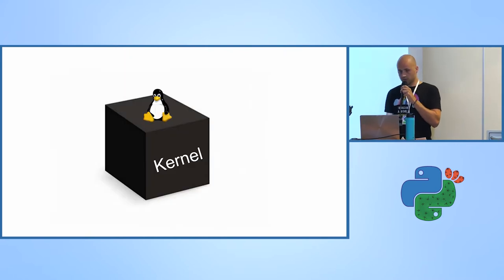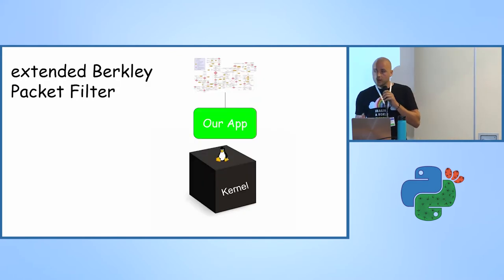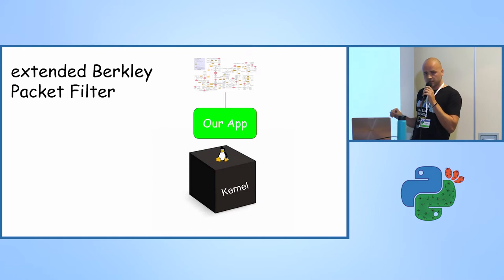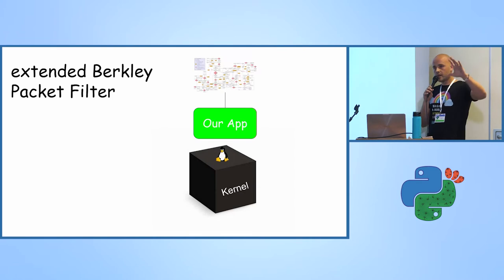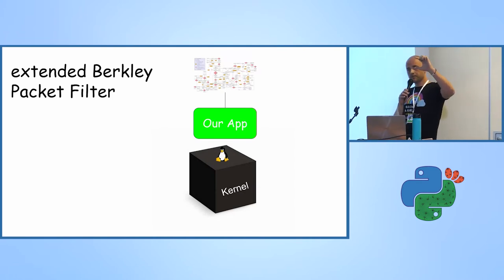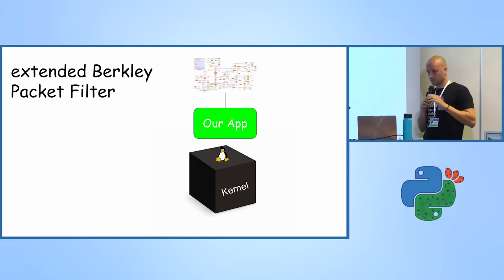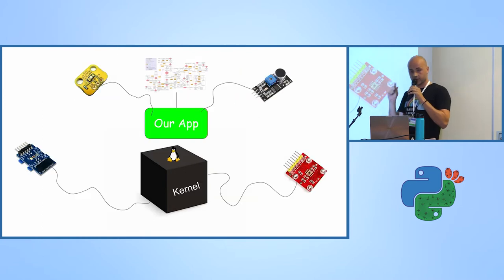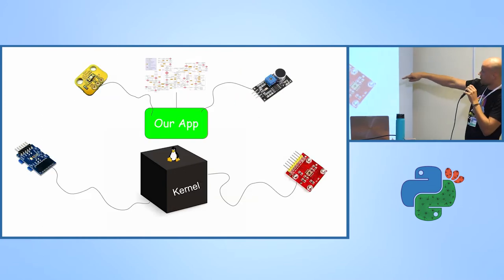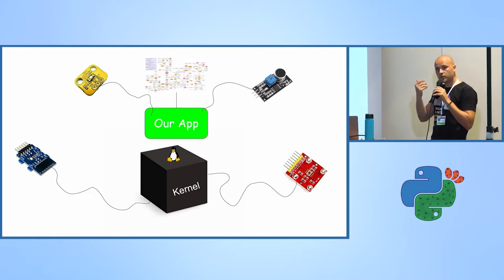eBPF stands for Extended Berkeley Packet Filters. It lets us write tiny programs and connect them to predefined hooks, whether in the Linux kernel or our user-space application. Those tiny programs can be thought of as small sensors that you connect to either the kernel or your application to get useful metrics.